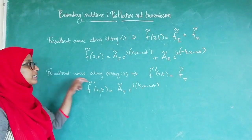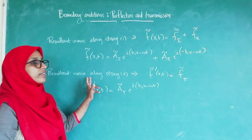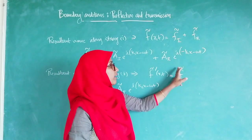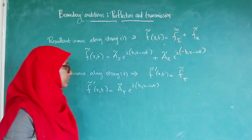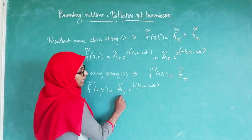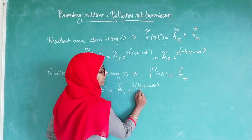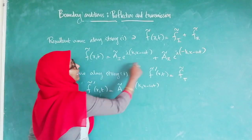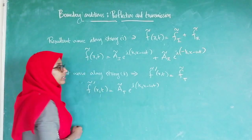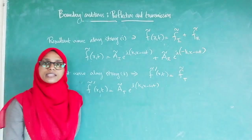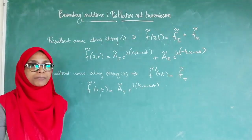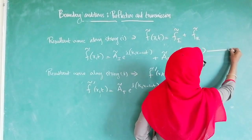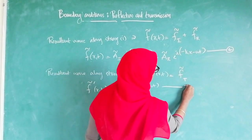Similarly, the resultant wave along string 2 is F' of X,t, which equals F_T. That is, F' of X,t equals A_T times e raised to i(K2X minus omega t) — equation 5. Here, A_I, A_R, and A_T represent the complex amplitudes of the incident, reflected, and transmitted waves respectively.